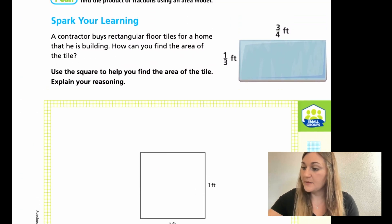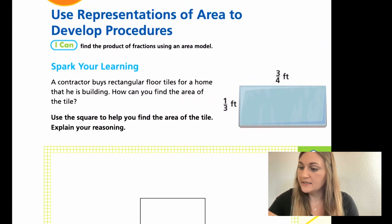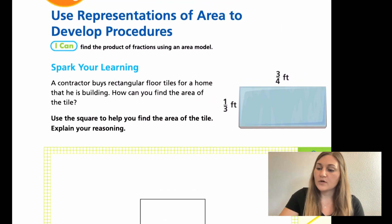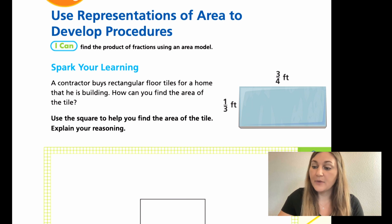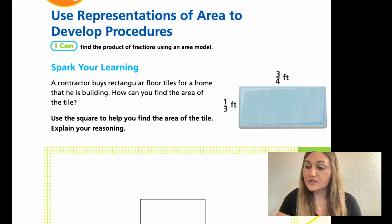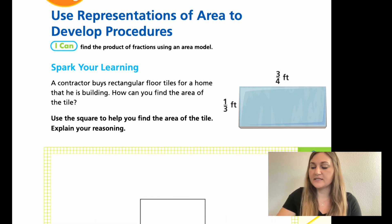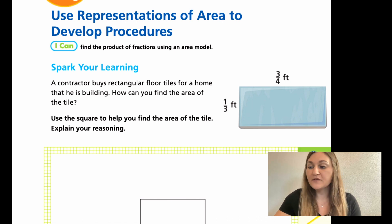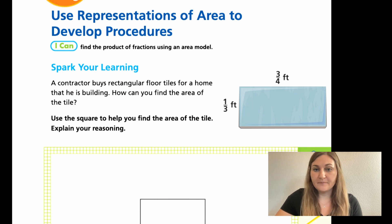Jumping into the lesson on page 199, we have a word problem that says a contractor buys rectangular floor tiles for a home that he is building. How can you find the area of the tile? Use the square to help you find the area of the tile. Explain your reasoning. So the tile that we have is 3 fourths of a foot by 1 third of a foot.